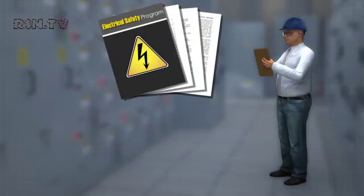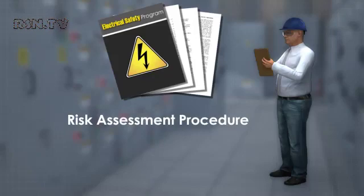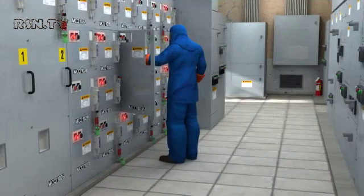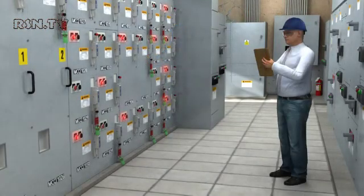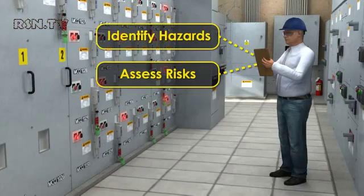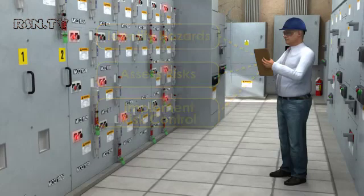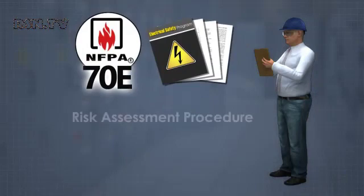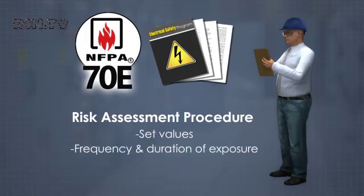NFPA 70E requires employers to include a risk assessment procedure in their electrical safety program. This can be helpful in deciding the protective measures necessary for a particular task. Before work begins that exposes a qualified person to electrical hazards, the employer must identify hazards, assess risks, and implement risk control. NFPA 70E includes detailed information on establishing an electrical hazard risk assessment procedure, including set values, frequency and duration of exposure, as well as likelihood of injury.